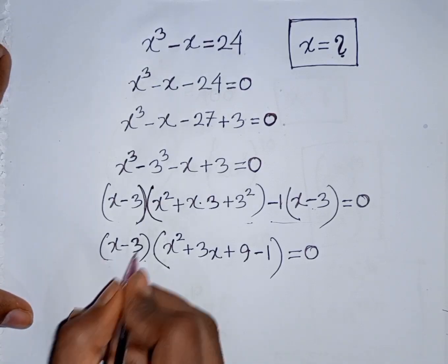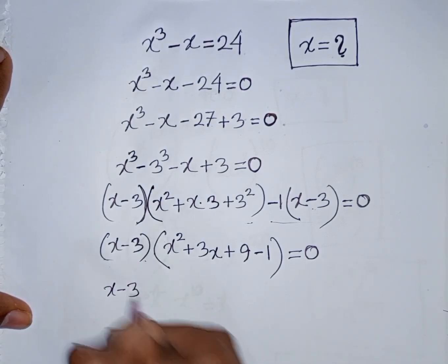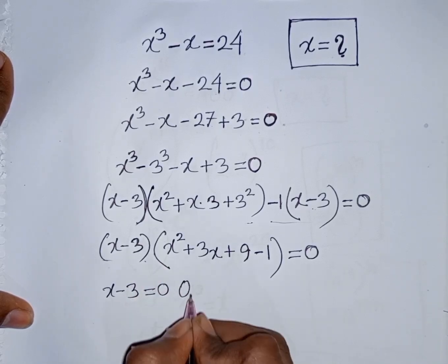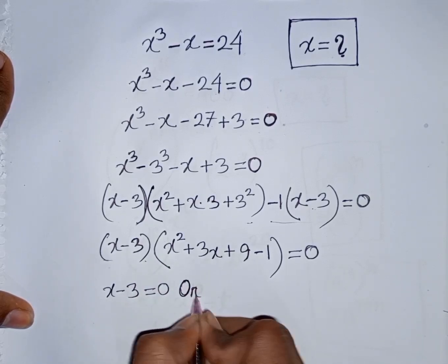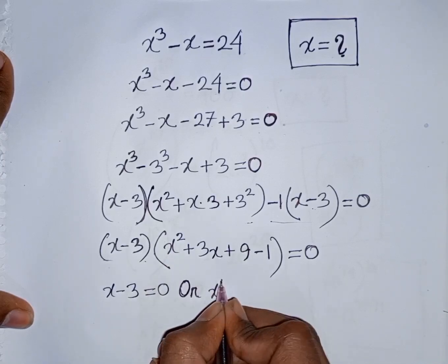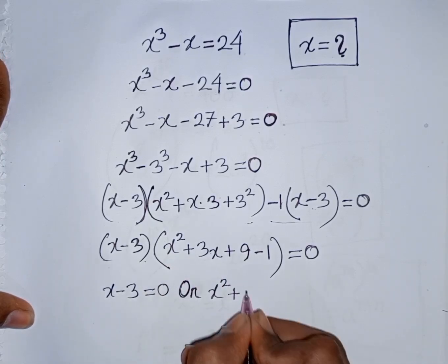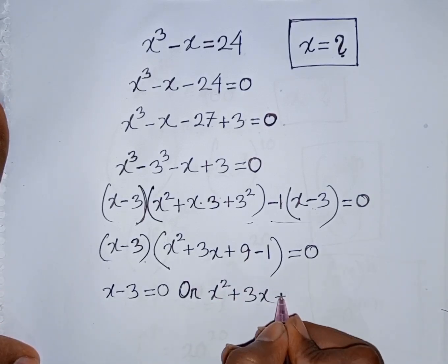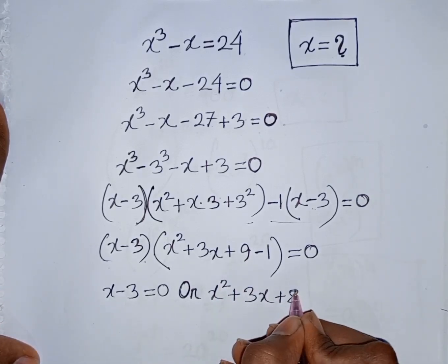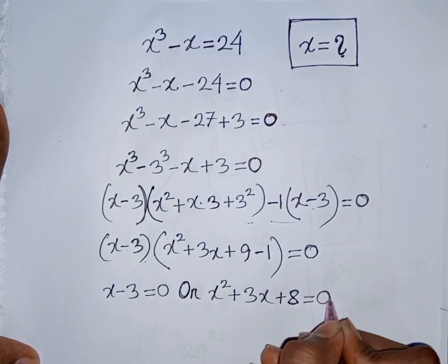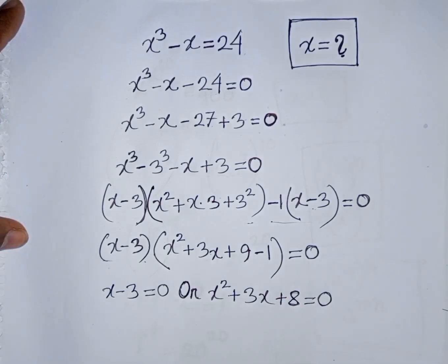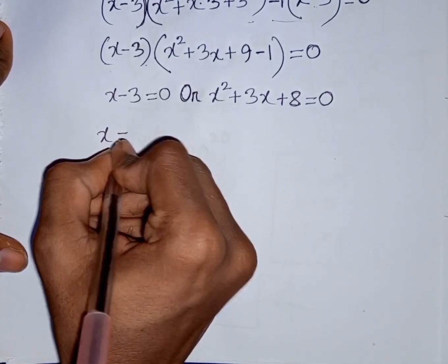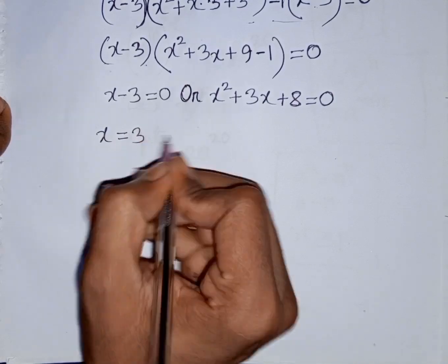Now we can write x - 3 = 0, which gives x = 3.